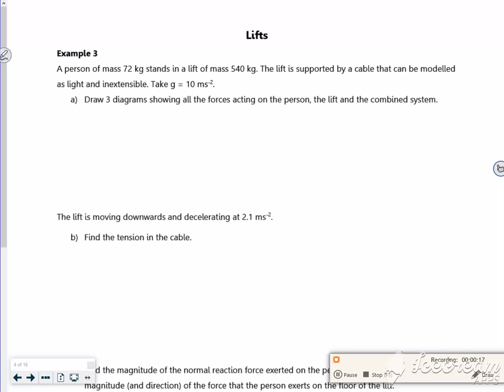So let's draw free body diagrams. First, think about the person. The person is stood on the floor of the lift, so they have 72G acting downwards, and the lift floor is pushing back with reaction force R. You haven't fallen through the floor, so the lift is pushing back. That's one diagram - the person.